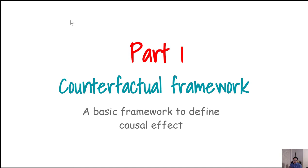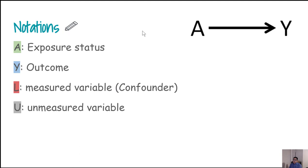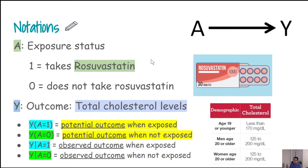In today's lecture, Part 1, I will talk about the counterfactual framework and some basic definitions of how to define causal effect. Let me describe the notations: A is the exposure status, Y is the outcome variable, L is a measured variable often representing a confounder, and U is the unmeasured variable. For a specific example, the exposure could be someone taking cholesterol medication, say rosuvastatin. Someone who takes rosuvastatin would be in the exposure group, and someone who does not would be in the non-exposed group.